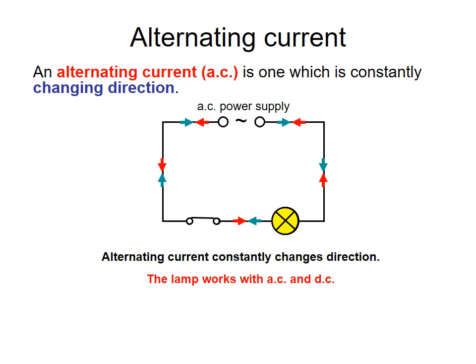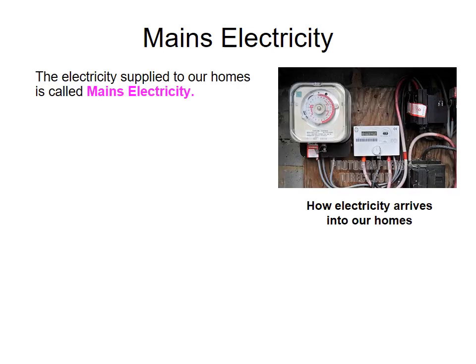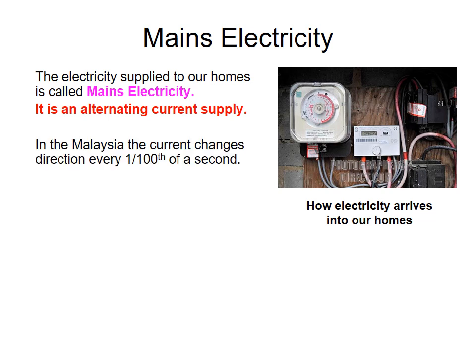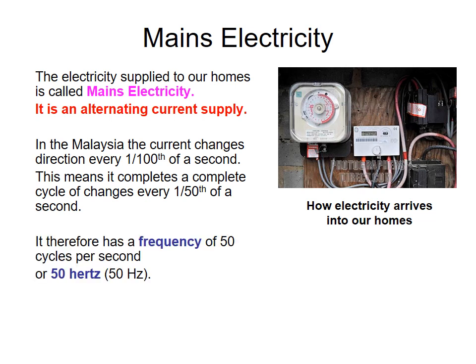This lamp can work both in AC and in DC. The electricity supply to our houses and schools is known as mains electricity, and it's an alternating current supply. In Malaysia and Singapore, the current changes direction every hundredth of a second, completing a full cycle every fiftieth of a second. It therefore has a frequency of 50 cycles per second, or 50 hertz.